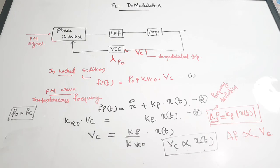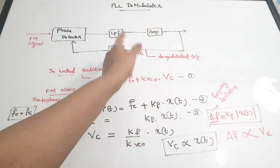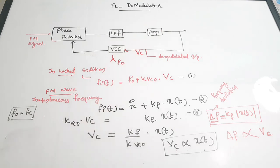The basic thing we have to do is lock this PLL. When the locked condition is achieved, all these relations are satisfied and we get our demodulated output, which is linearly proportional to VC, the control voltage. The PLL demodulator is very commonly used and can be used for detection of both wideband and narrowband FM signals with a higher degree of linearity, which cannot be achieved by other detection methods.